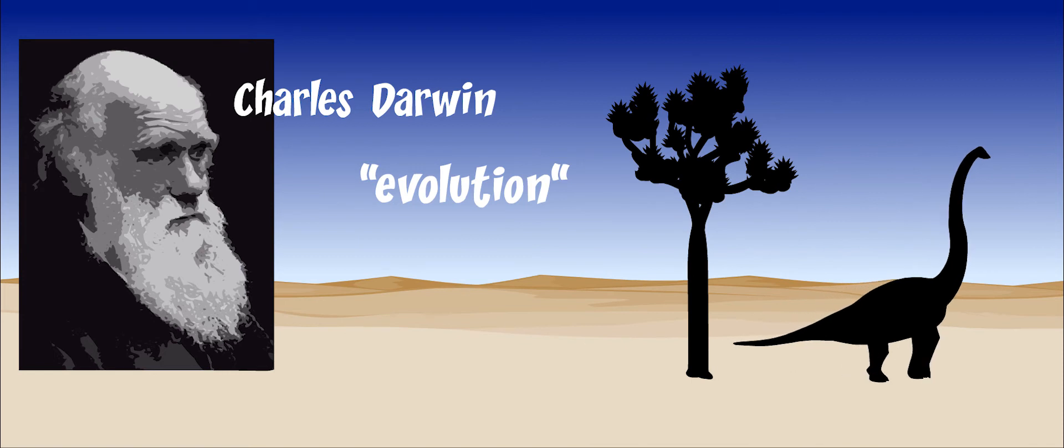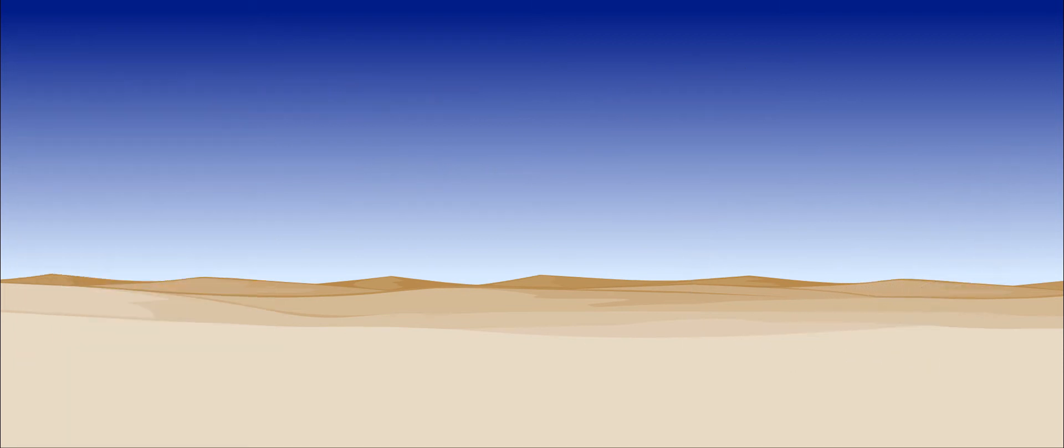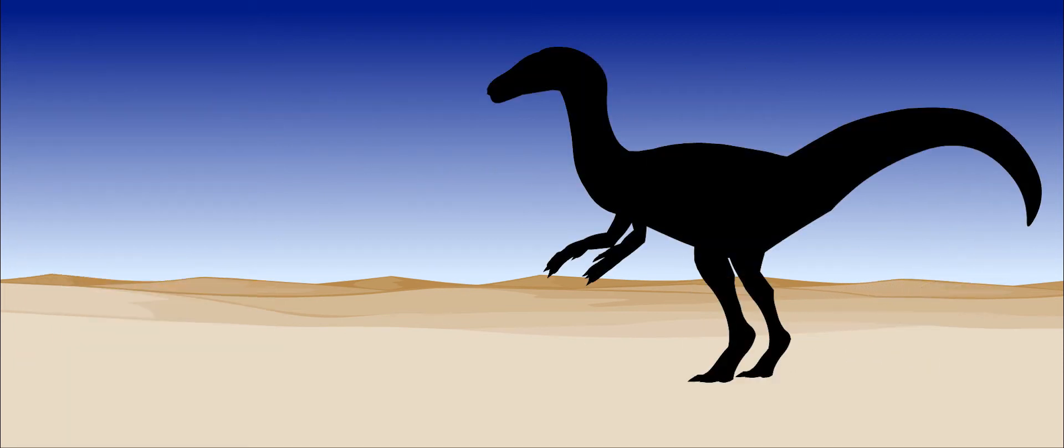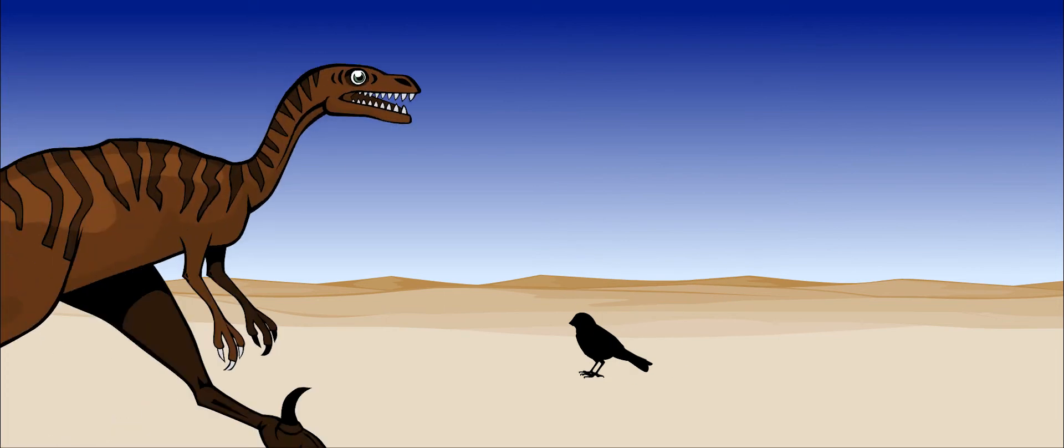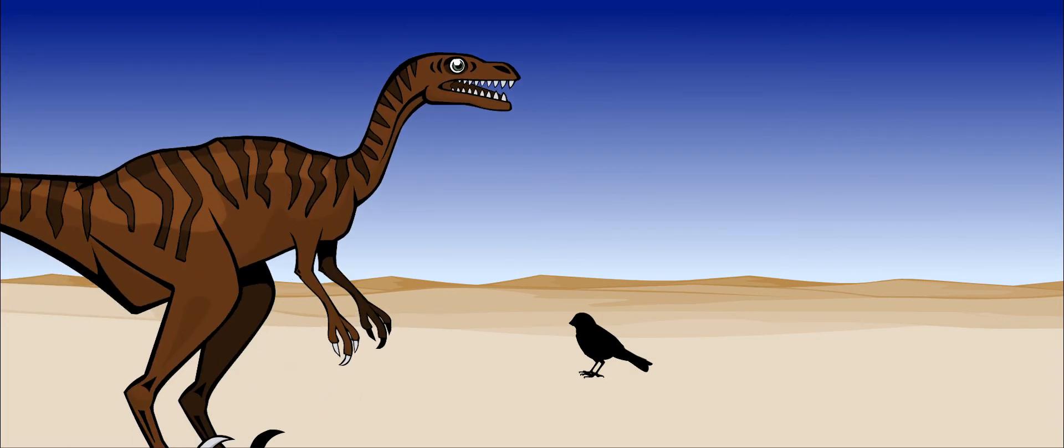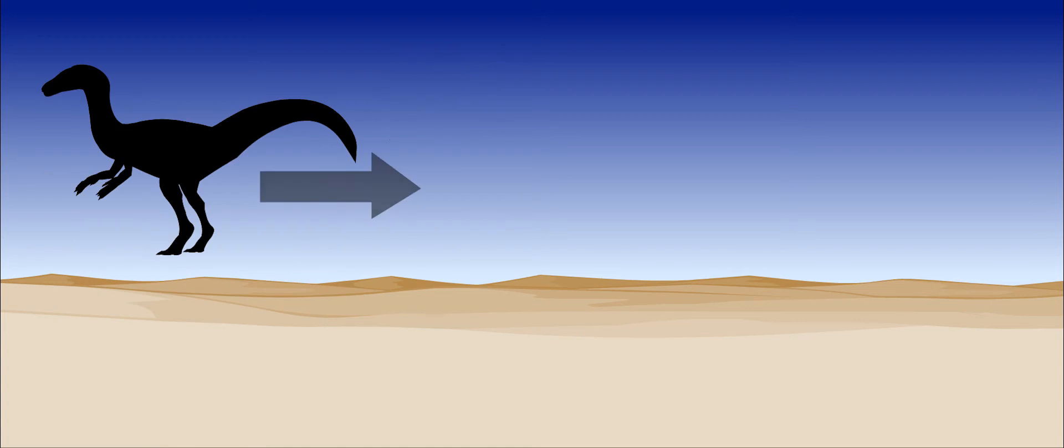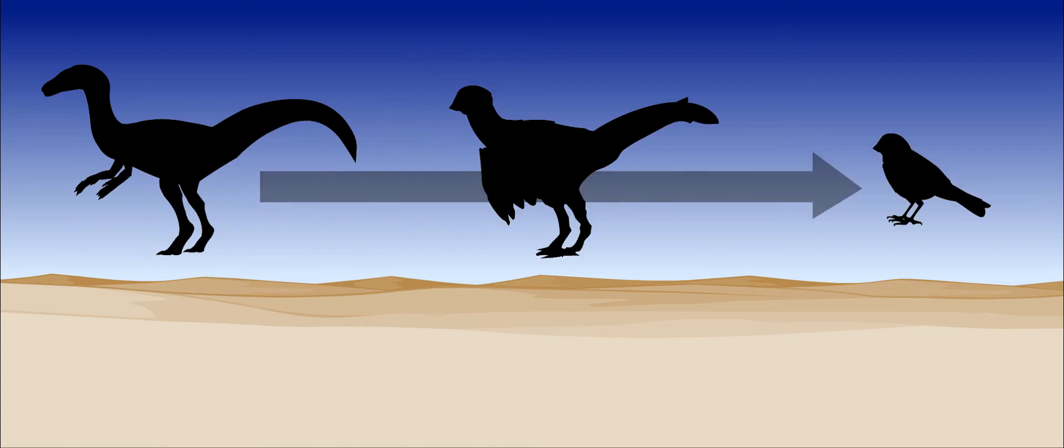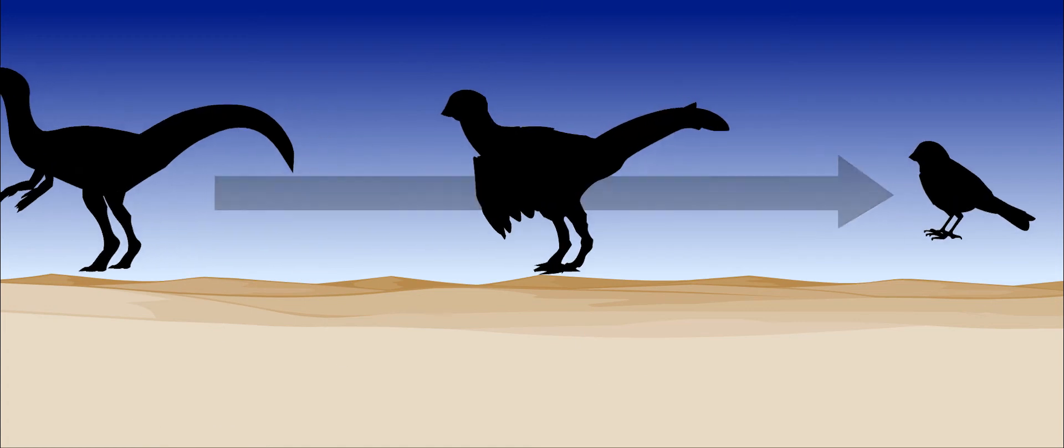For a long time, paleontologists believed that the birds we see today changed from theropod dinosaurs, such as Velociraptor. If dinosaurs slowly evolved into birds, then there must have been a creature that was part bird and part dinosaur.